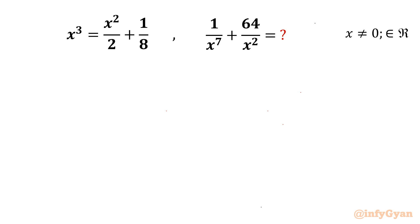Welcome back to InfiGyaan friends. Today we have a very interesting question from algebraic expressions and simplification. The given equation is x³ = x²/2 + 1/8, and we have to evaluate 1 over x⁷ plus 64 over x², where x is non-zero and x belongs to real numbers.